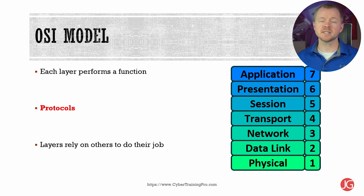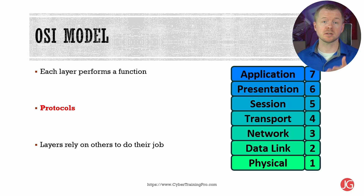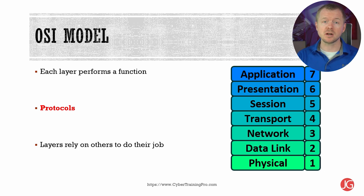A long time ago, most hardware used proprietary communication protocols to communicate. Today, by having a standard OSI model, we can have hardware from a variety of vendors and it's all going to be able to communicate together. The OSI model consists of seven different layers, with each layer performing its own important function with protocols to achieve that function. Protocols are sets of clearly defined rules, regulations, standards, and procedures that enable hardware and software to function properly at a particular layer.